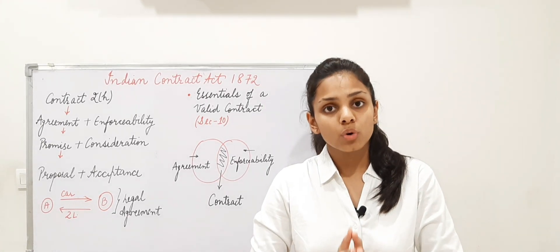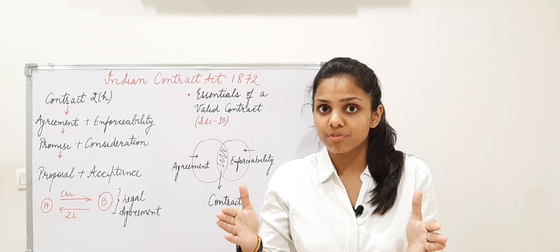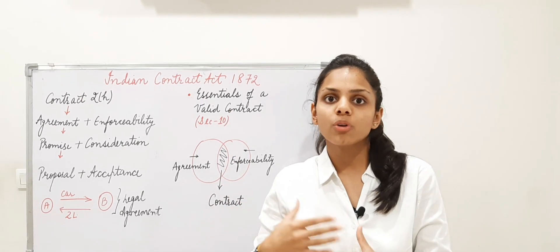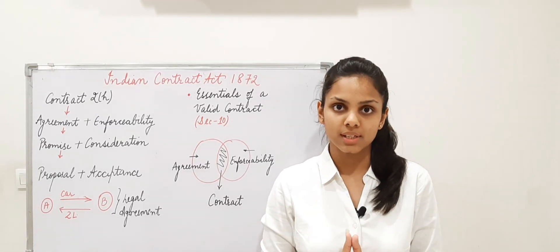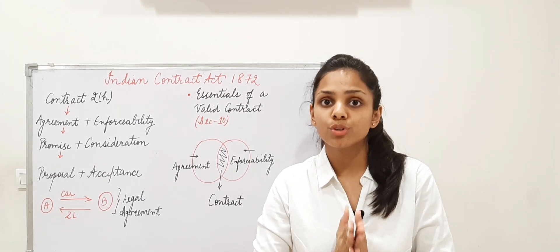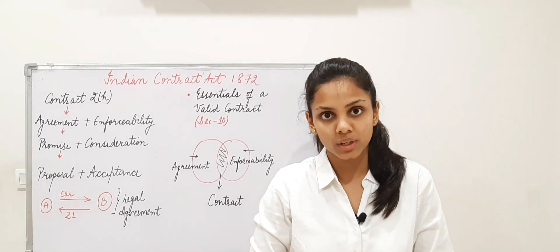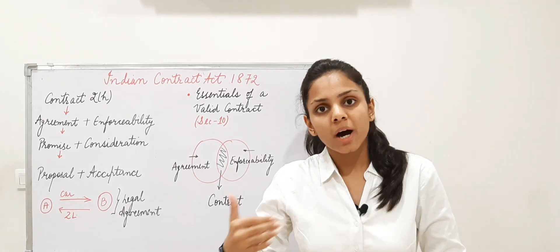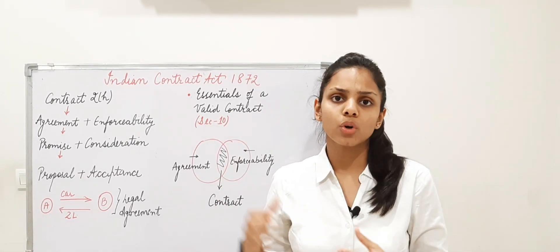In the Indian Contract Act, there are a total of 238 sections. Section 1 to Section 75 deals with general principles. We're going to study the general principles first, and then we'll discuss special contracts. The act came into force on September 1, 1872, and initially only 75 sections came into existence. After that, the remaining sections were inserted into the Indian Contract Act.